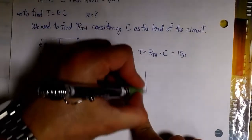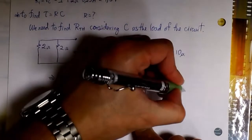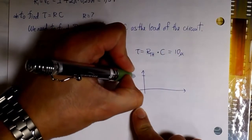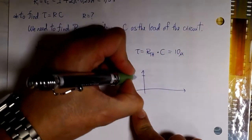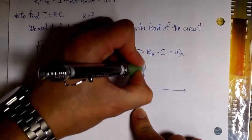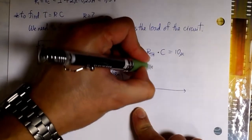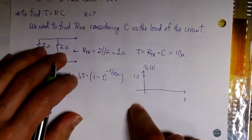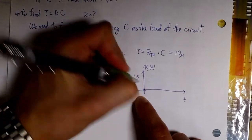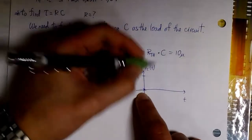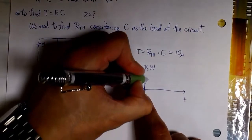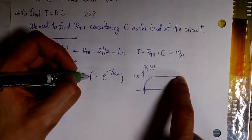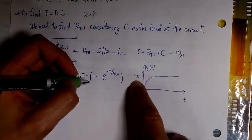Now we have k1 and tau, so we have the complete expression for the voltage: 1.5 times (1 minus e to the minus t over 10 micro). If we want to plot this, the final value is going to be 1.5 — it starts at zero, then the capacitor starts charging, and we get 1.5 volts at the end. That's the steady-state value of the voltage.